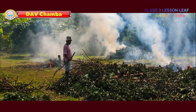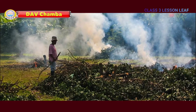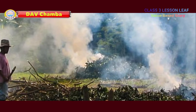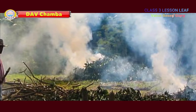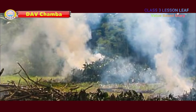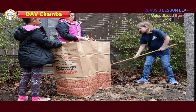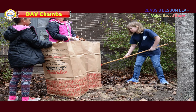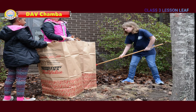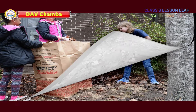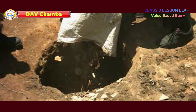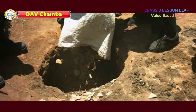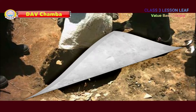They told the gardener that the smoke produced was harmful for the environment. They helped the gardener to pick up all the leaves and put them in a pit. Rahul suggested that these leaves can be later used to make compost.